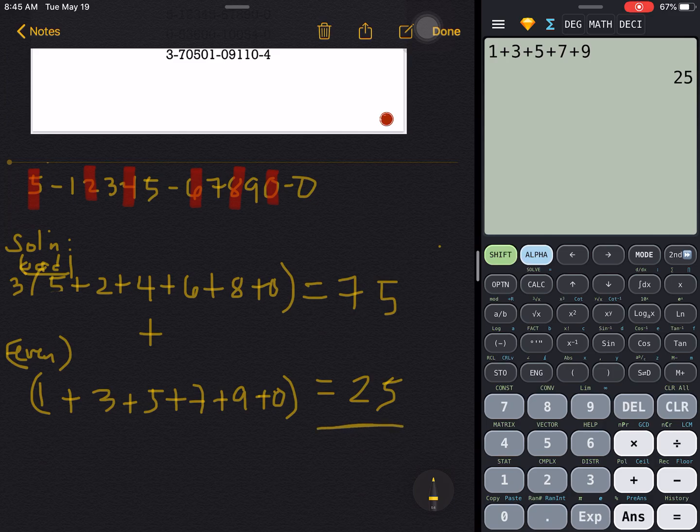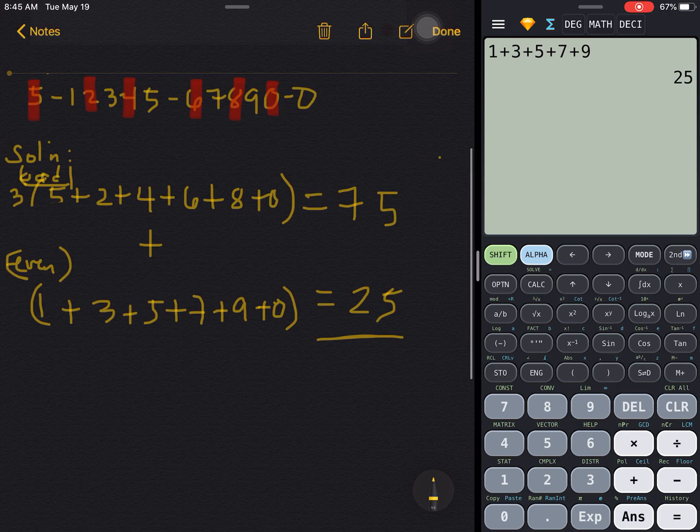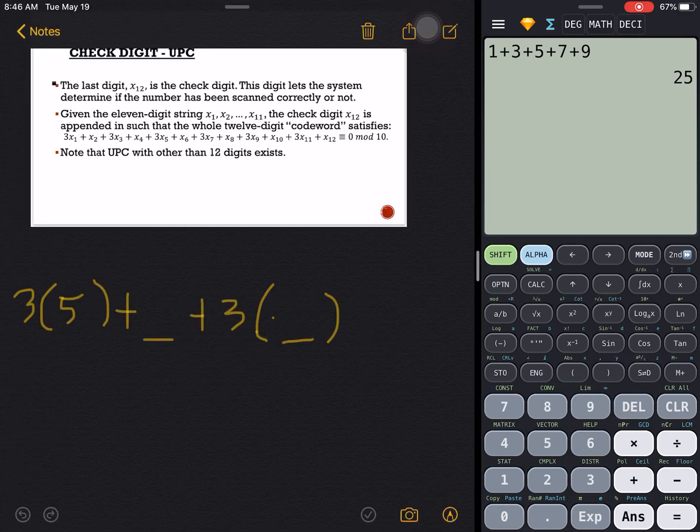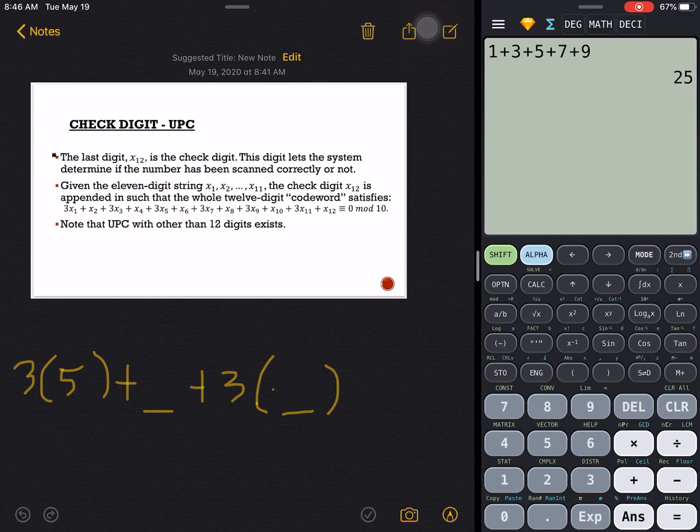That would give us 25. Notice that these numbers right here should be added because of the algorithm that we had earlier, and when we add this to this one right here, this partial sum, this partial sum would give us a total sum of 100.